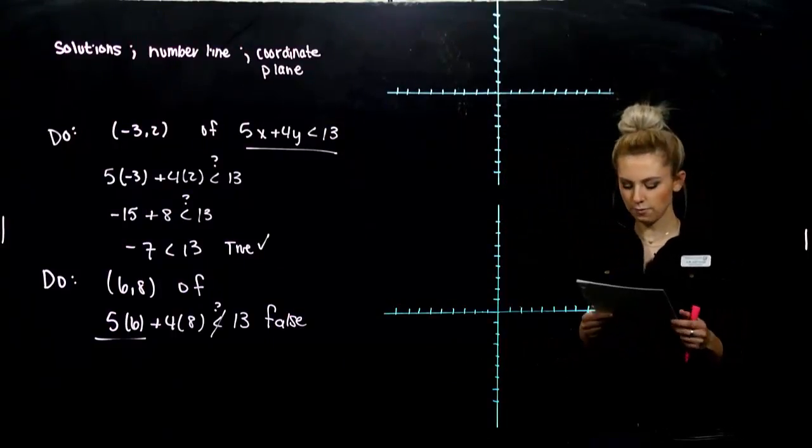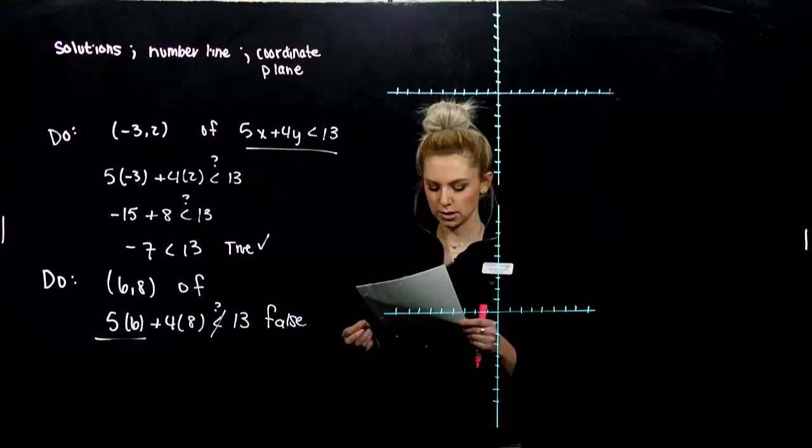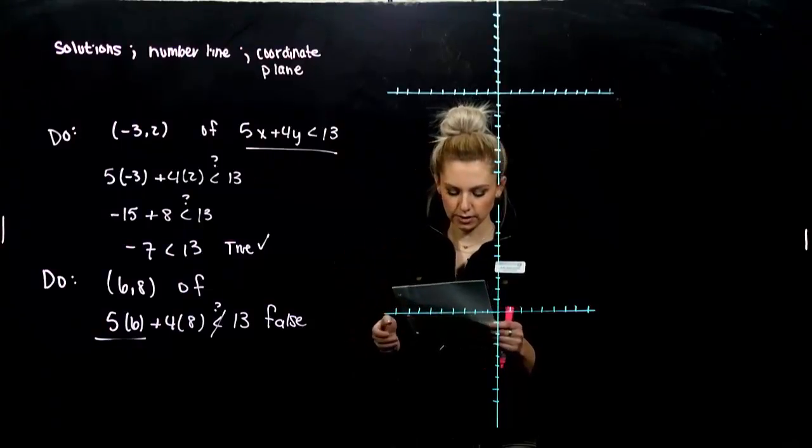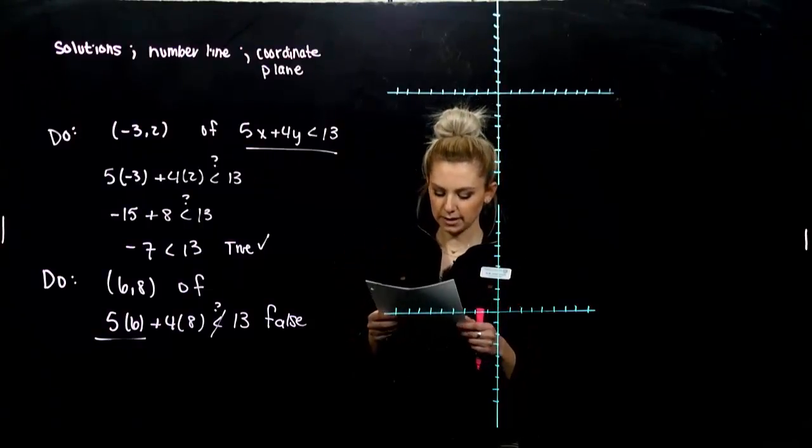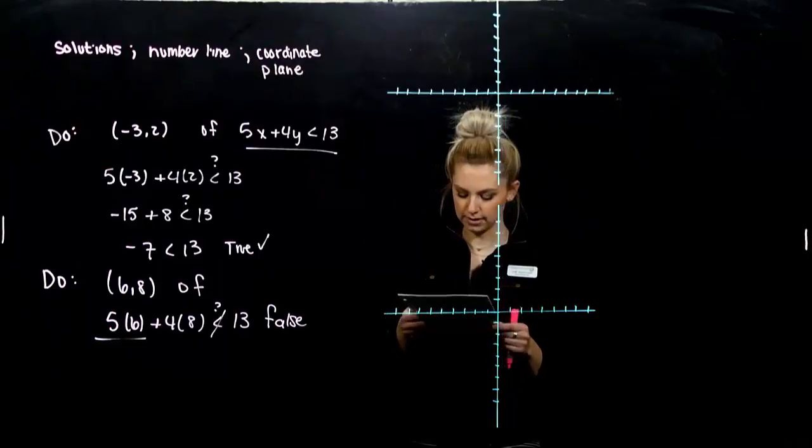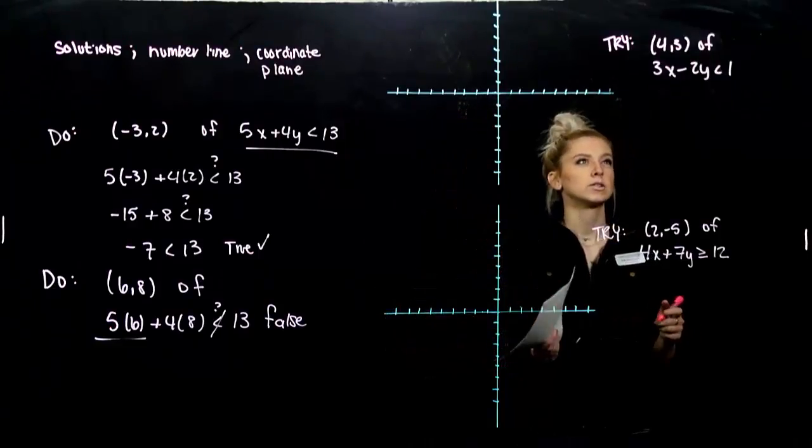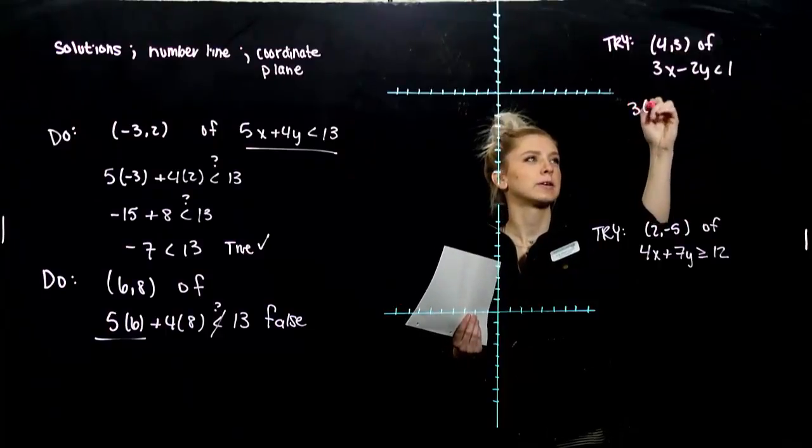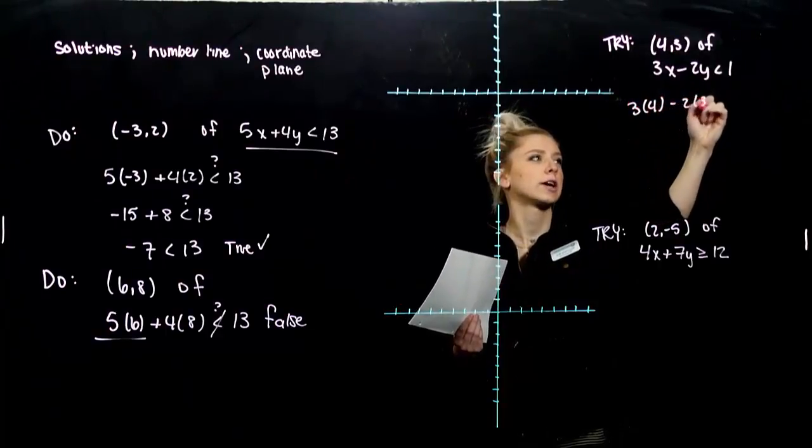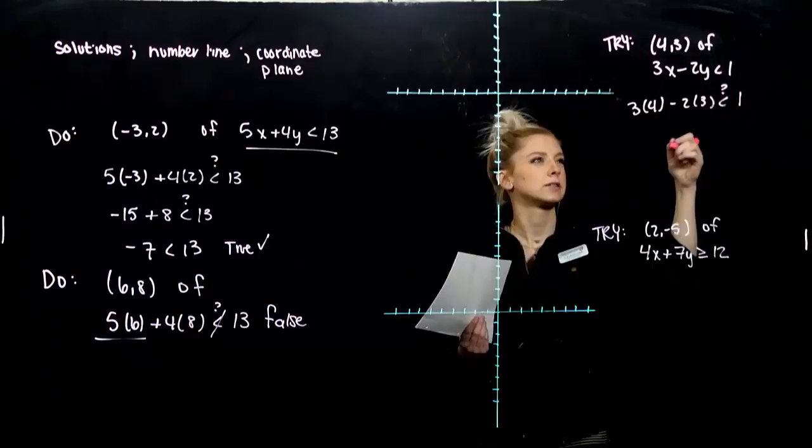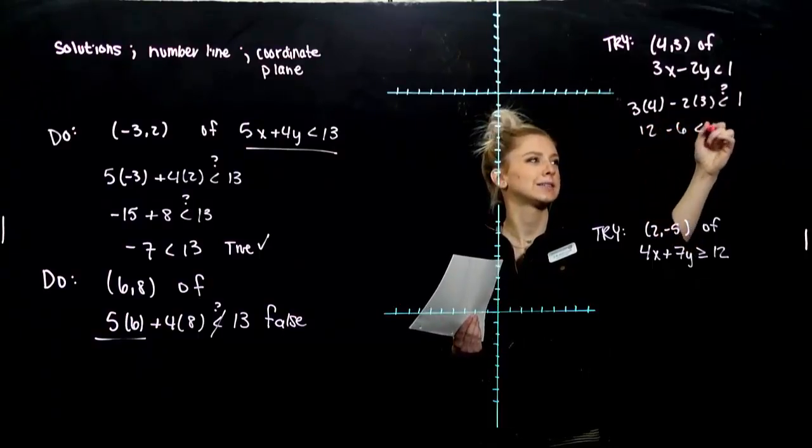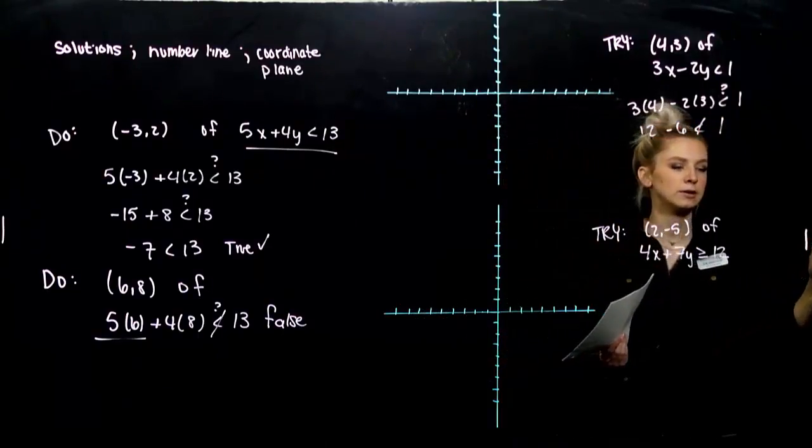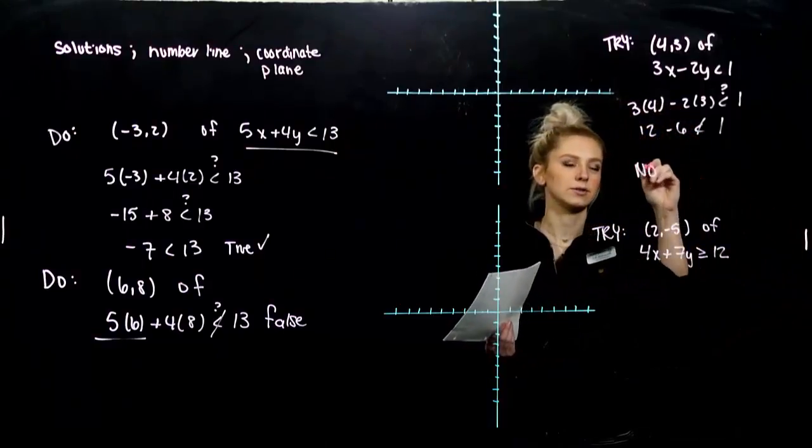So take a few for you. Determine whether 4, 3 is a solution of that first inequality, and 2, minus 5 if that is a solution of the second one. So the first one, what we're looking at. 4 for x, 3 for y. Let's plug them in and check. Is that really less than 1? So I've got 12 taking away 6. That's definitely not less than 1. So no, not a solution.